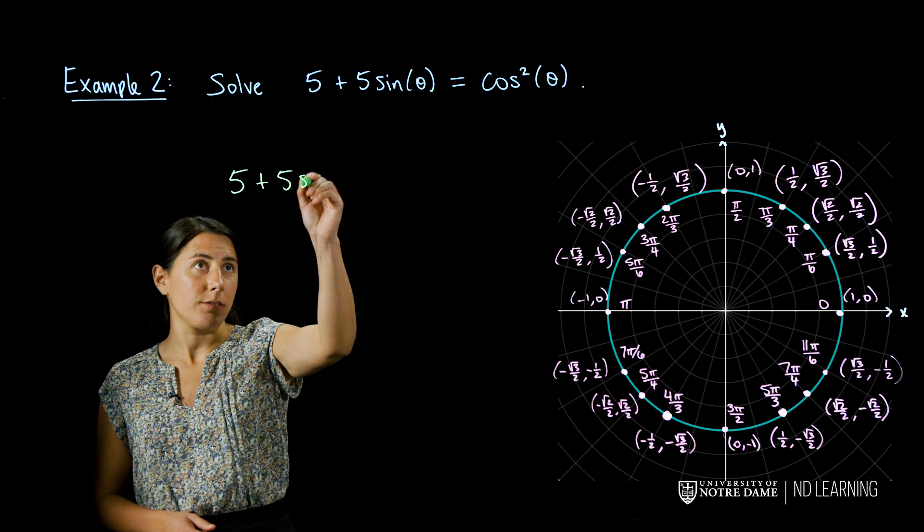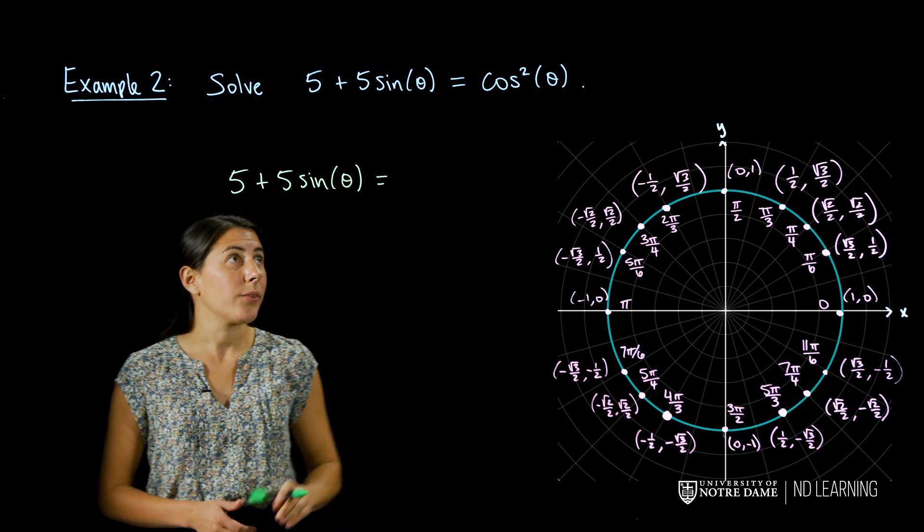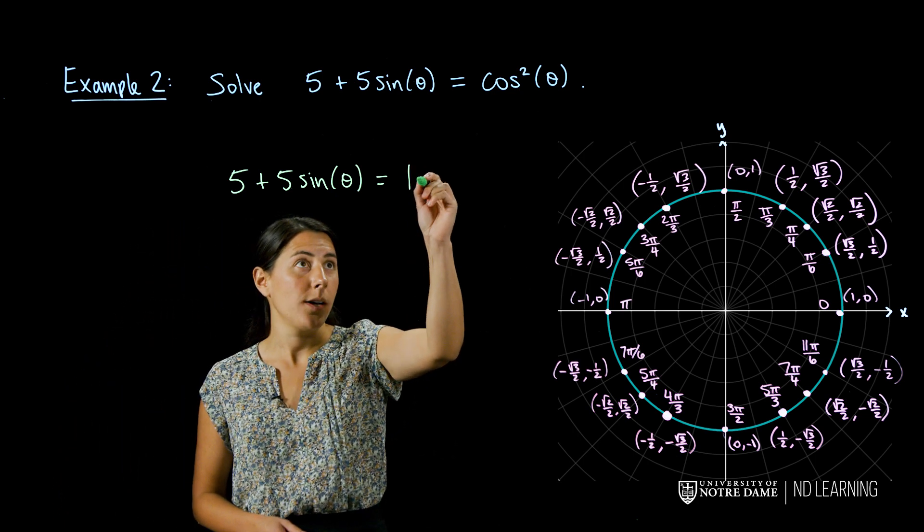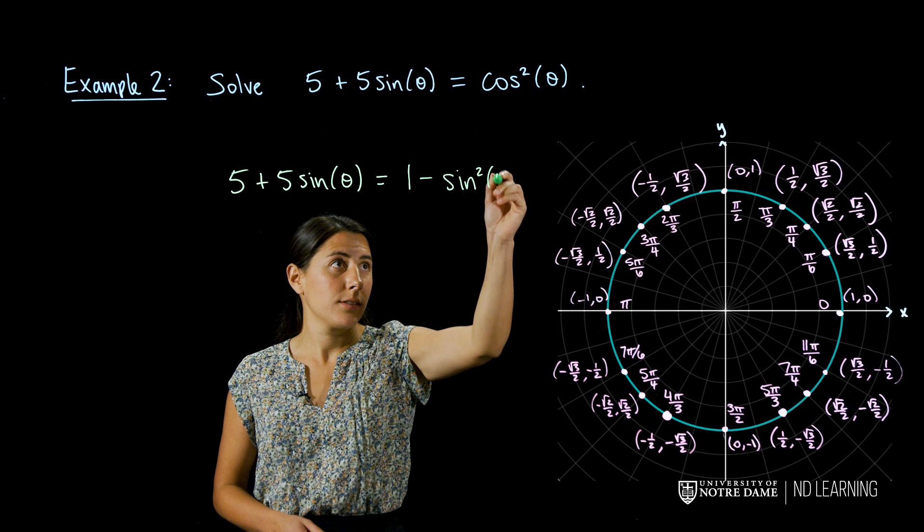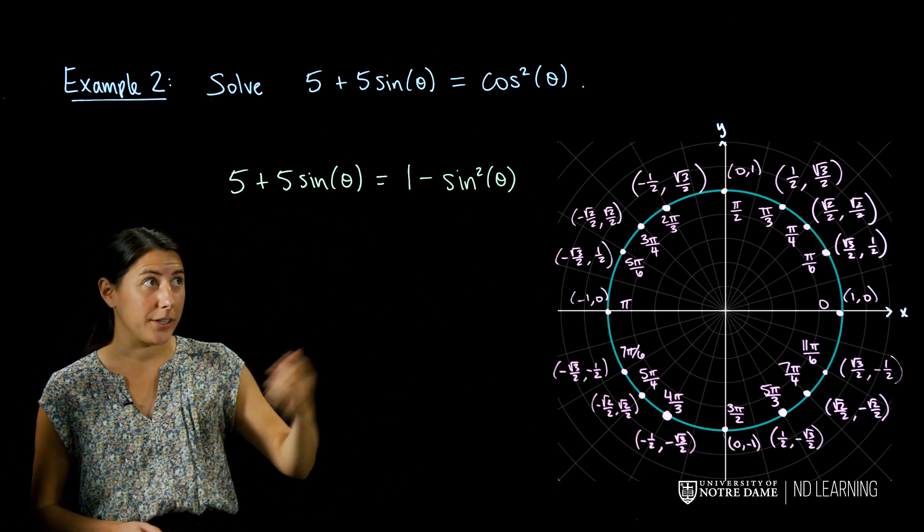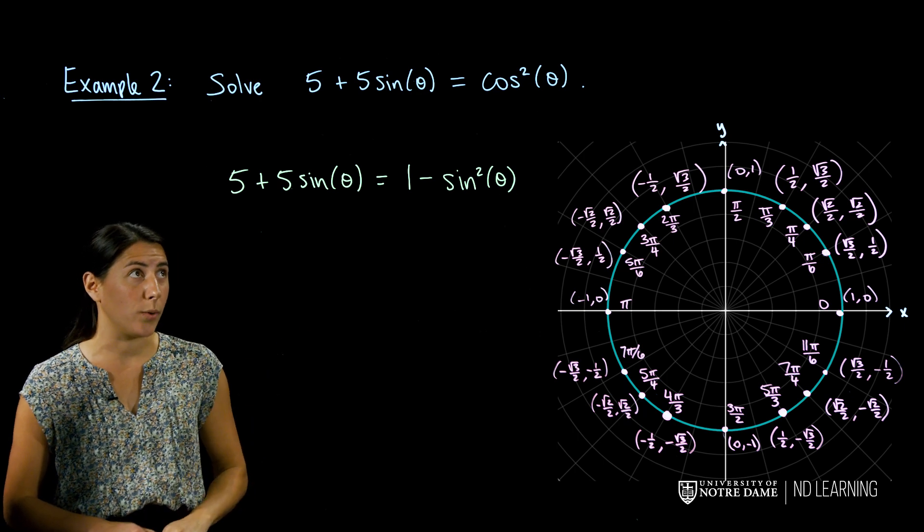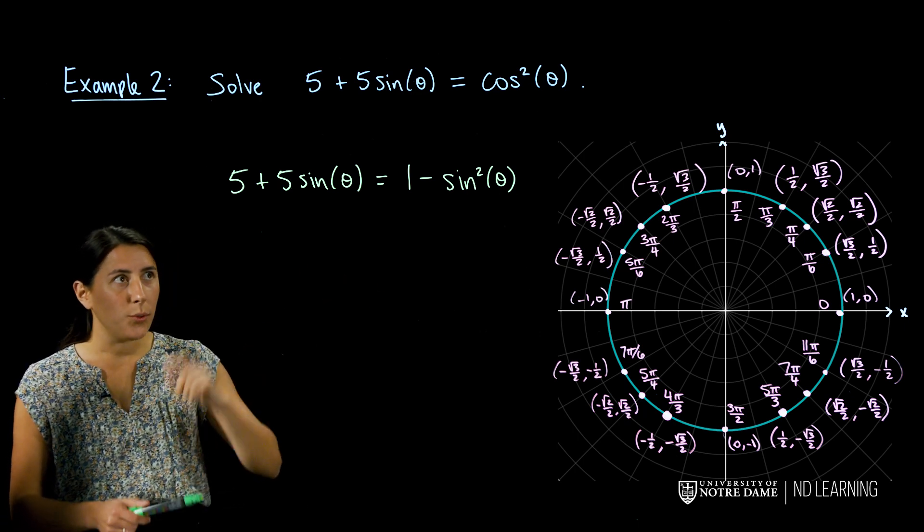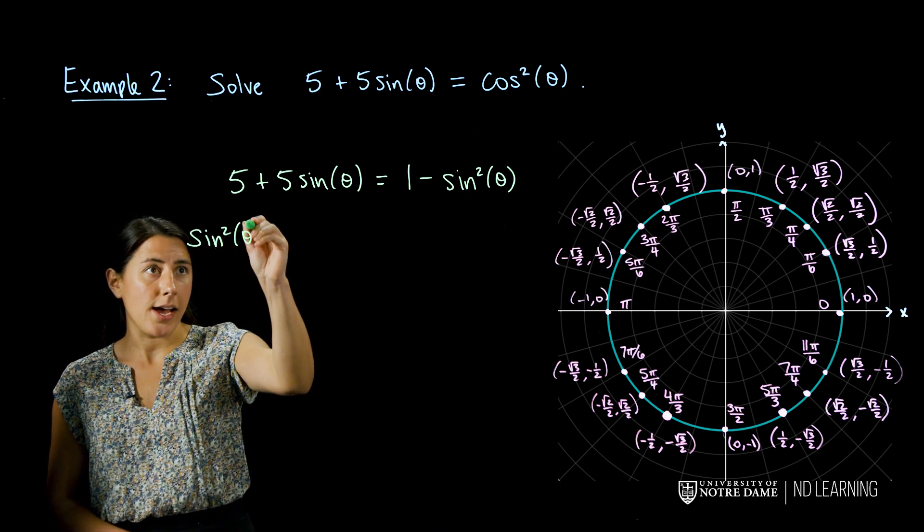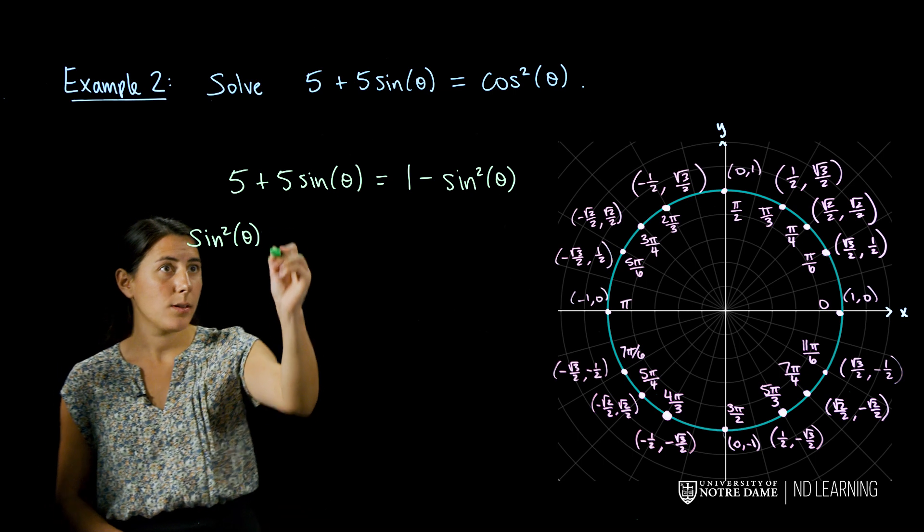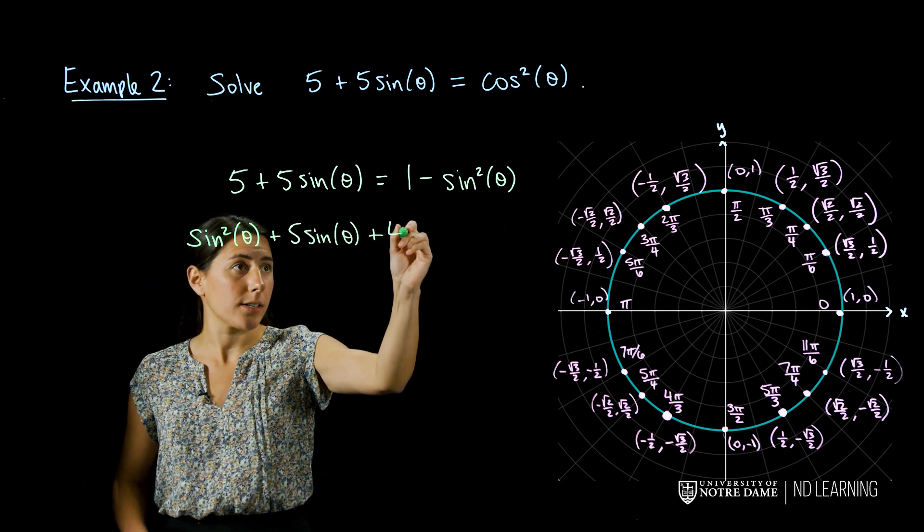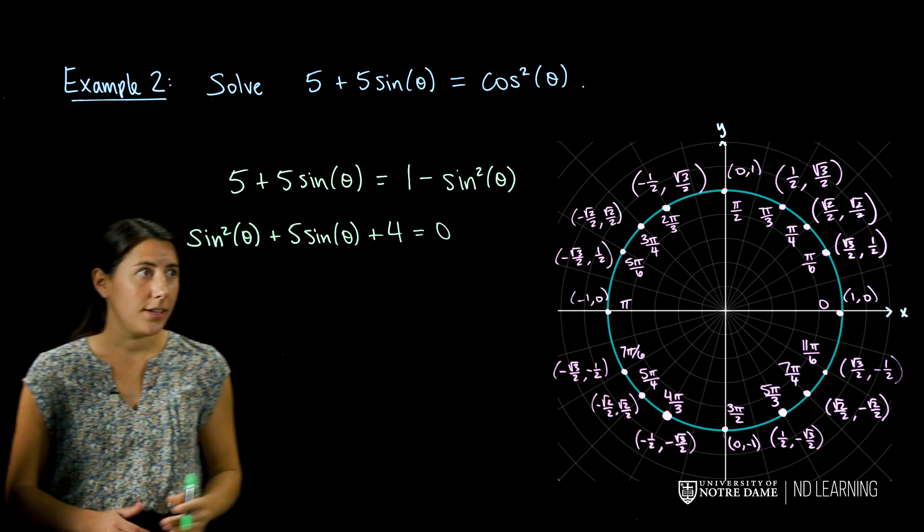So let's not touch the left-hand side. But on the right-hand side, cosine squared, we can rewrite this as 1 minus sine squared of theta. Again using our Pythagorean trigonometric identity, that's sine squared plus cosine squared is equal to 1. And then if we move everything onto the left-hand side, I can rewrite this as sine squared of theta plus 5 sine theta plus 4 is equal to 0.